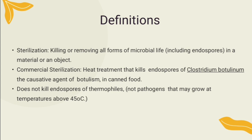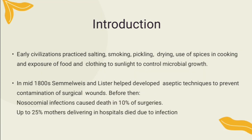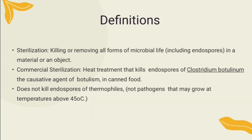Let's define some terms. Sterilization occurs when all forms of microbial life, including the most resistant forms — the bacterial endospores and prions — are eliminated. Items to be sterilized can be surfaces, equipment, foods, medications, as well as biological culture media. Sterilization can be achieved by applications of heat, pressure, chemicals, irradiation, or filtration. Extreme heat is the most common method used to kill microorganisms.